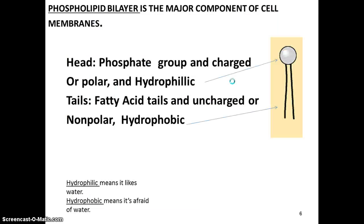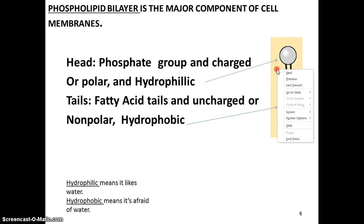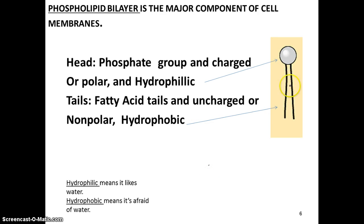Now, the phospholipid bilayer is the major component of the cell membrane. Basically, it has — if you remember — a phosphate head, which is the charged part of the phospholipid. This is the part that we say is polar. And remember, the word polar means anything that is charged.